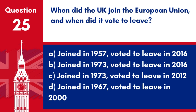Question 25. When did the UK join the European Union and when did it vote to leave? A. Joined in 1957, voted to leave in 2016. B. Joined in 1973, voted to leave in 2016. C. Joined in 1973, voted to leave in 2012. D. Joined in 1967, voted to leave in 2000. Answer: B. Joined in 1973, voted to leave in 2016. The UK joined the European Union in 1973 and voted to leave in 2016.